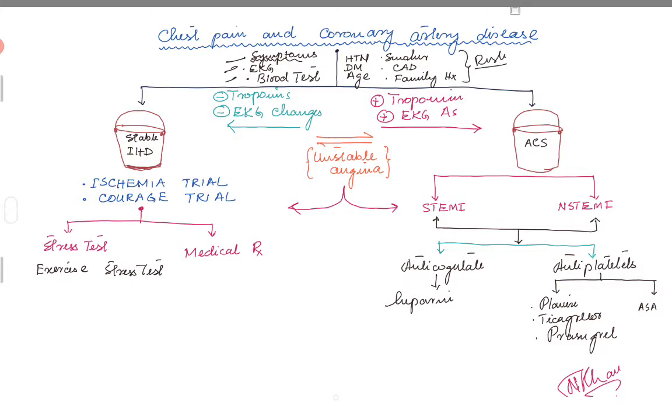Obviously if somebody is young, not a smoker, not diabetic, no family history, they probably have a lower risk of coronary artery disease and the chest pain might be atypical or musculoskeletal. But your pretest probability goes up when patients have previous coronary artery disease, are smokers, diabetic, or elderly.